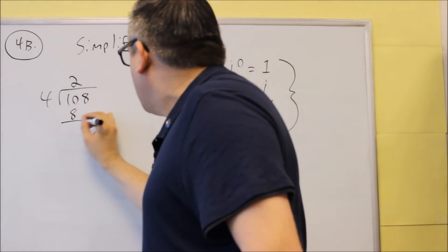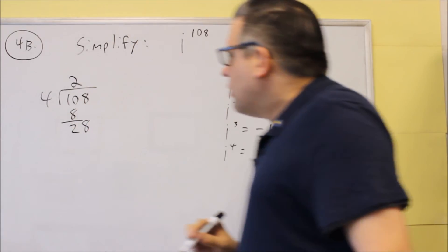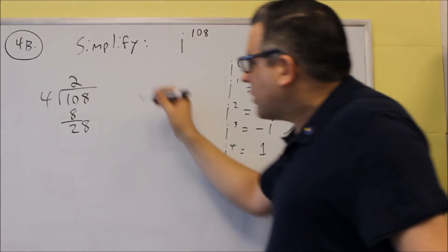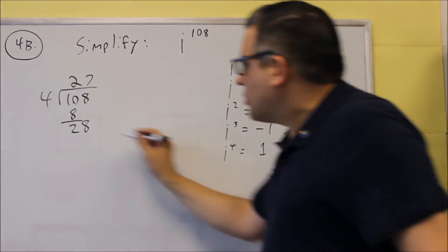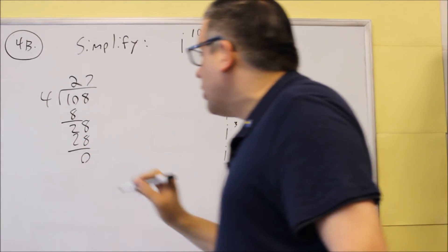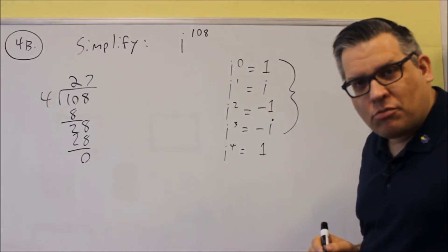So it goes in there twice. We get a 2 left over. Let's bring down the 8. And then that's going to go in 7 times. And this particular one, we don't have a remainder. We have a remainder of 0.